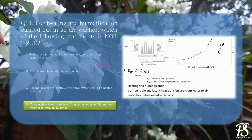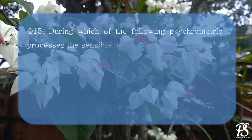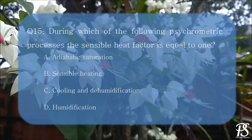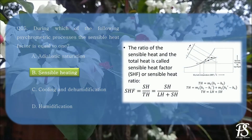This figure shows the process. During which of the following psychrometric processes is the sensible heat factor equal to 1? A. Adiabatic saturation, B. Sensible heating, C. Cooling and dehumidification, or D. Humidification. The correct answer is sensible heating. The sensible heat factor is the ratio of sensible heat to total heat (sensible plus latent heat). In a sensible heating process, the latent heat component is zero, hence the ratio equals 1. The sensible heat factor for sensible heating is 1, while it is 0 for humidification, and lies between 0 and 1 for cooling and dehumidification.